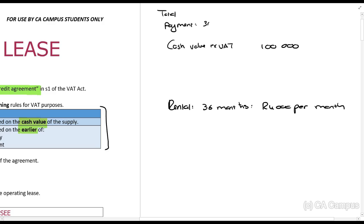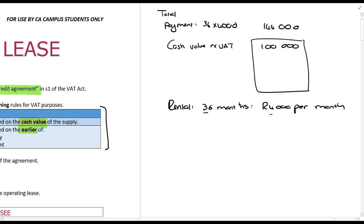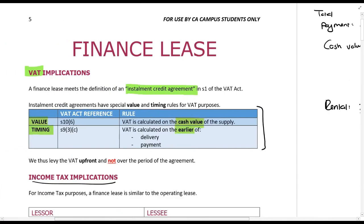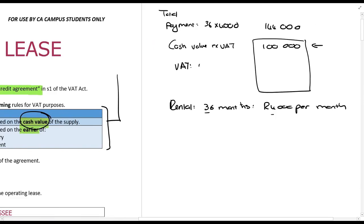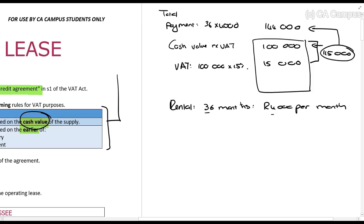That means you're going to pay a total of 144,000 rands. But if you went to the store and bought this asset, the cash value excluding VAT is 100,000 rands. The VAT rule tells us VAT is calculated on the cash value — so 100,000 times 15% equals 15,000 rands. The total including VAT is 115,000 rands. The difference between 115,000 and 144,000 is 29,000 rands — those are finance charges.